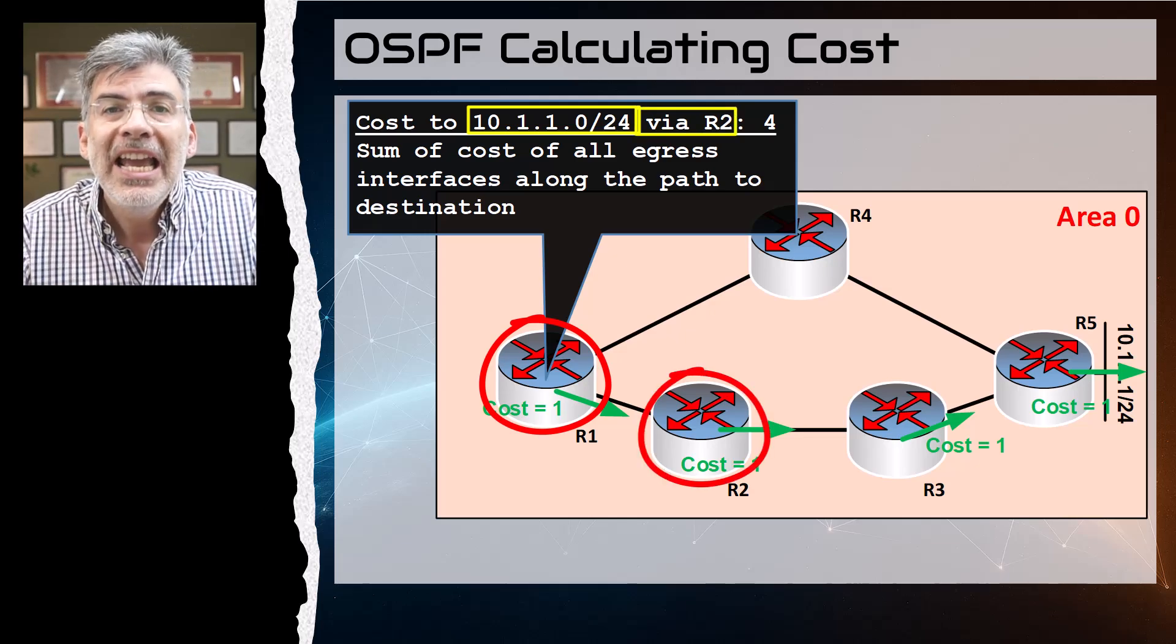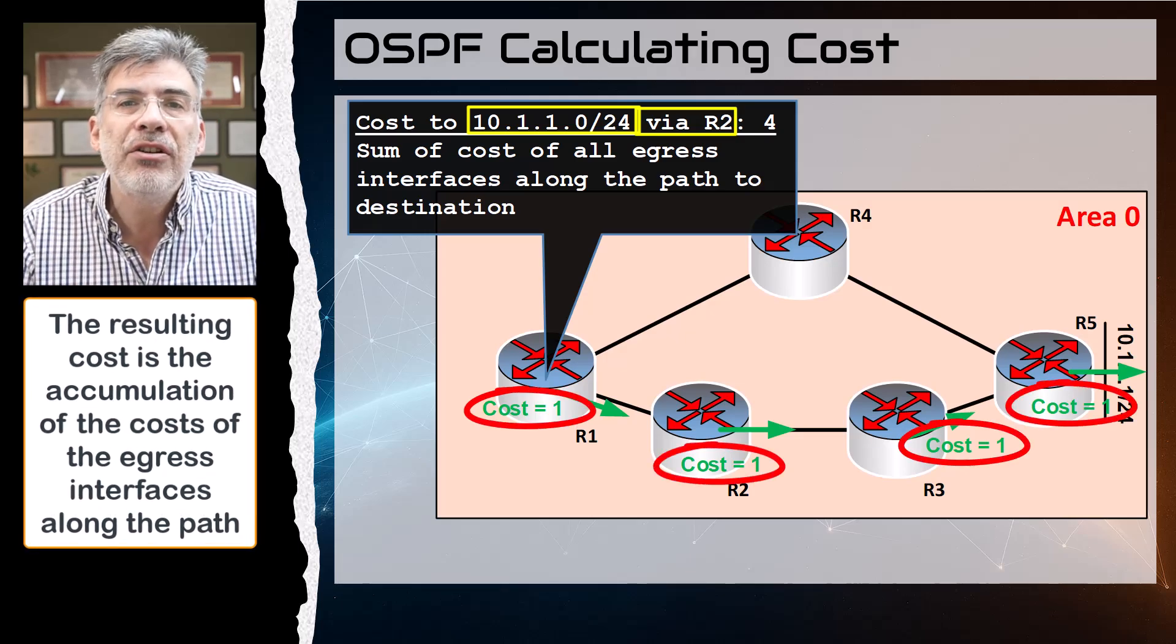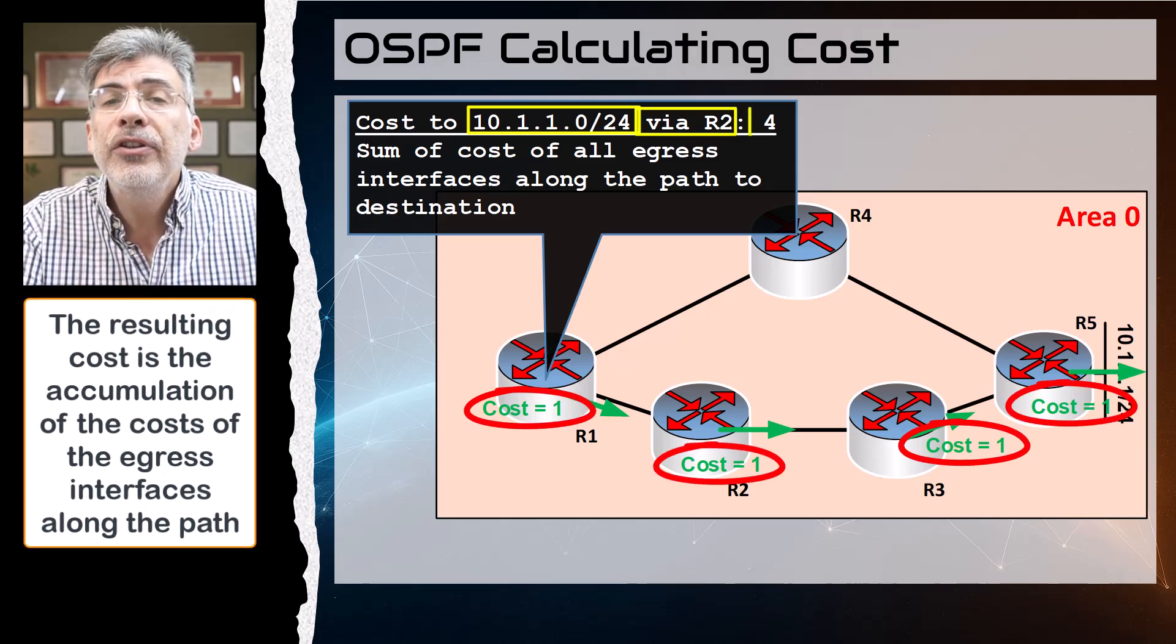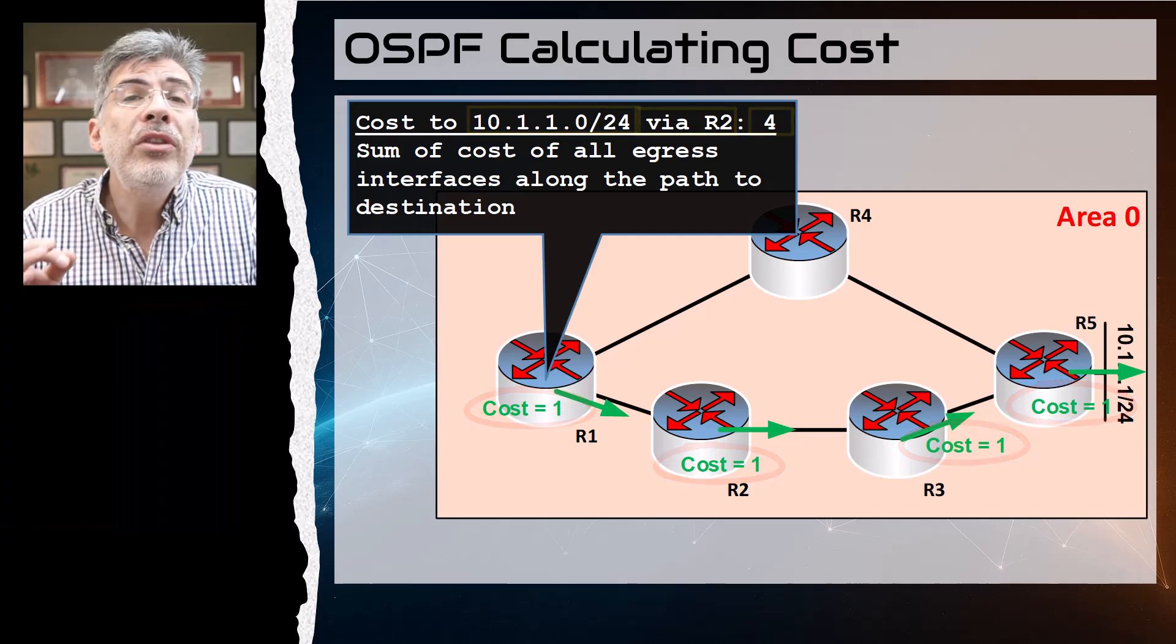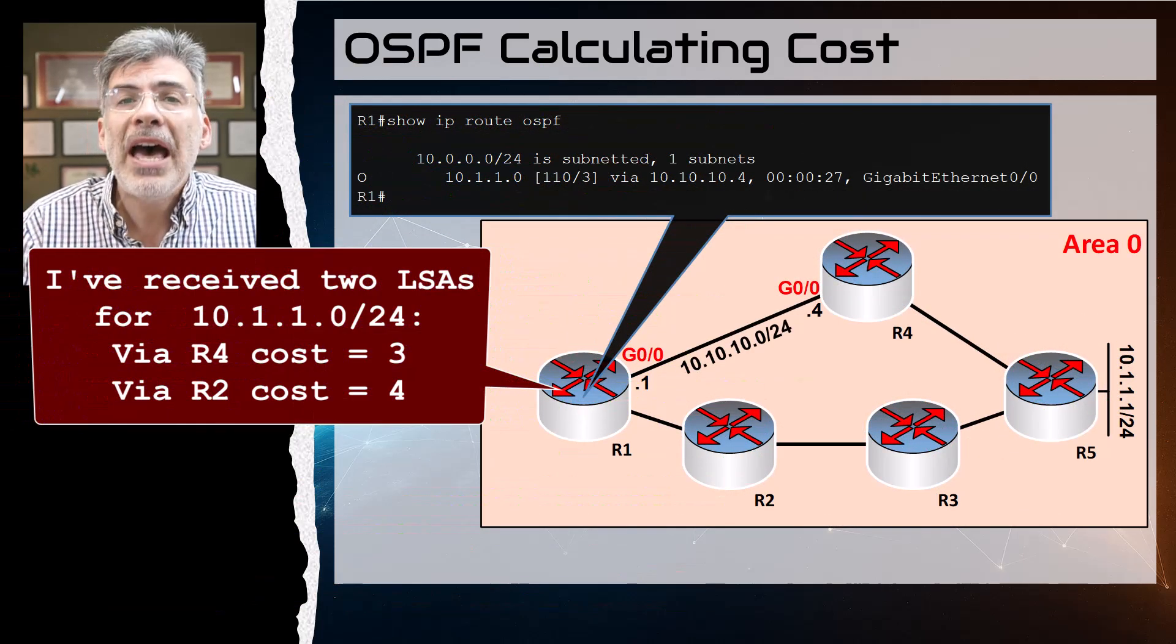And actually, the total cost to reach it is essentially the accumulation of the costs of the egress interfaces along the path, for a total cost of four. Now, once both of these LSAs reach R1, it sees two paths to reach the destination.